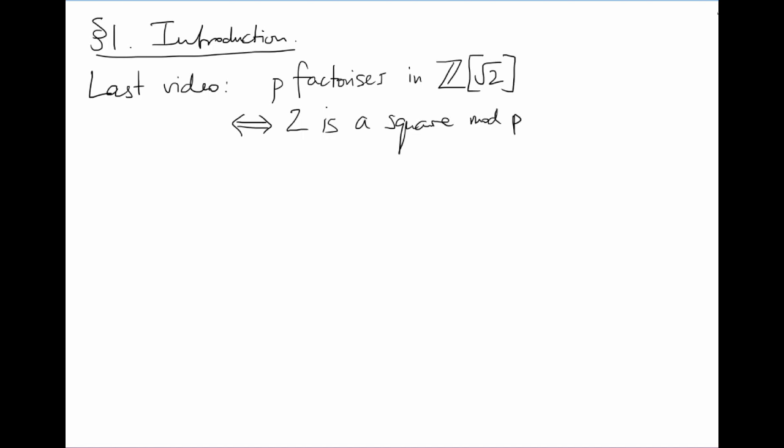But it turns out we don't need to. We were also able to show that, excluding the easy case when p equals 2, this just boils down to asking whether or not p is plus or minus 1 mod 8. This now answers our question for all primes p simultaneously.